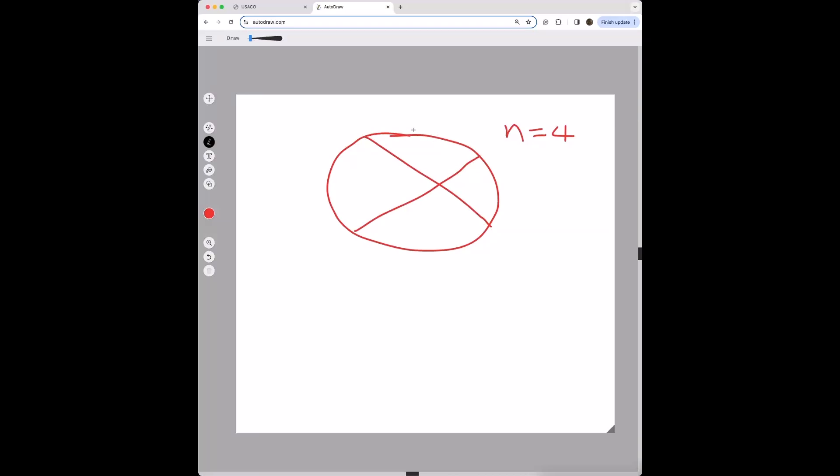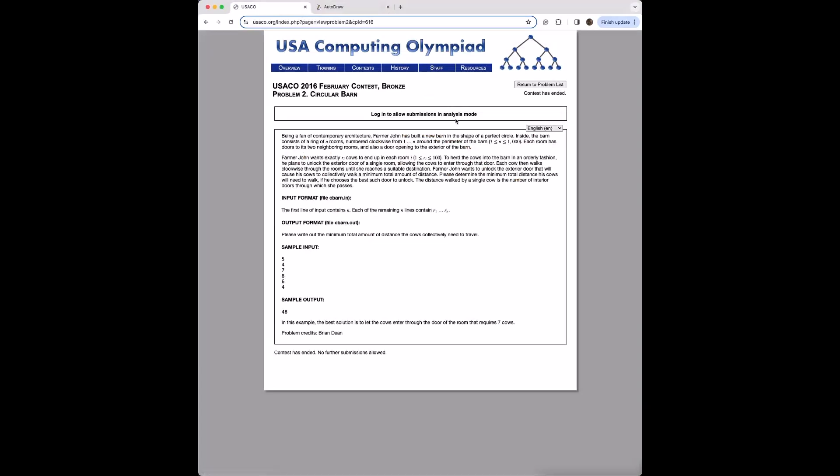What we're going to do is simulate what would happen each time we enter through each barn's door, each room's exterior door. So we're going to do one iteration here, another here, another here, and another here.